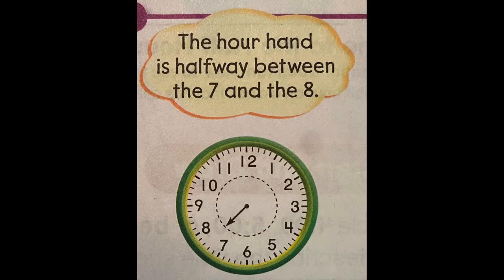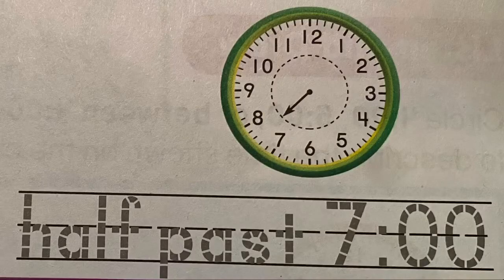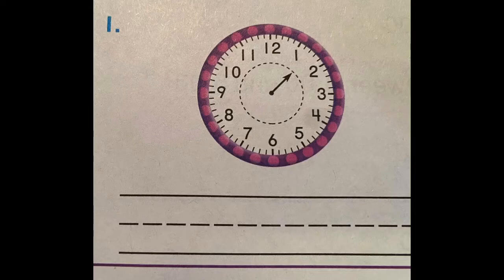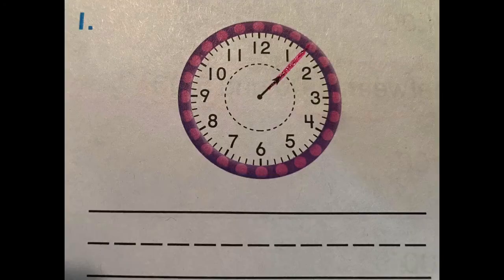When a half hour has passed, the hour hand points halfway between two numbers. Here, the hour hand is halfway between the seven and the eight, because the time is past seven o'clock and not all the way to eight o'clock yet.